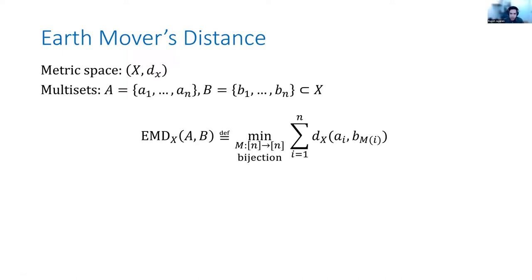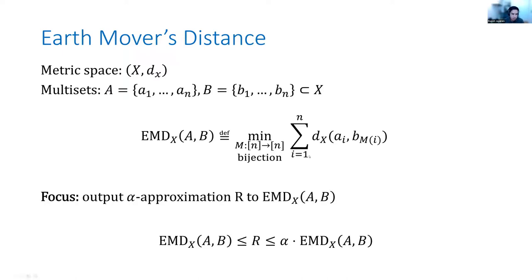In this talk, we'll be focused mostly on computing approximations to the EarthMover Distance. Our goal will be to output some number R which is an alpha approximation — meaning R is always at least the EarthMover Distance and at most alpha times larger than the EarthMover Distance.